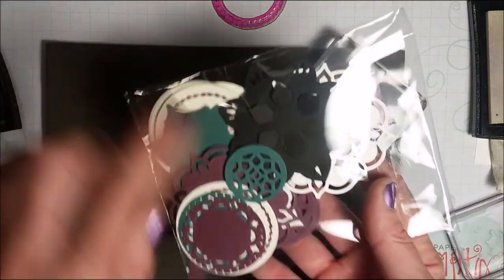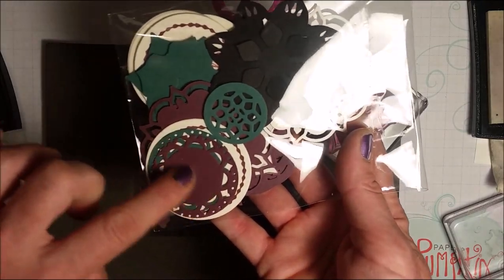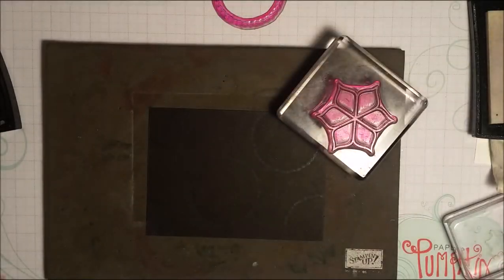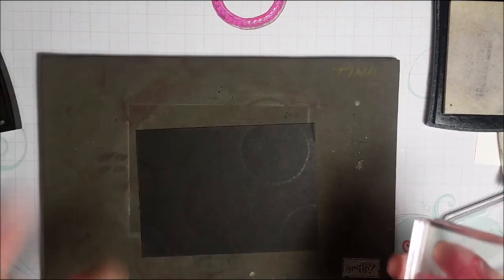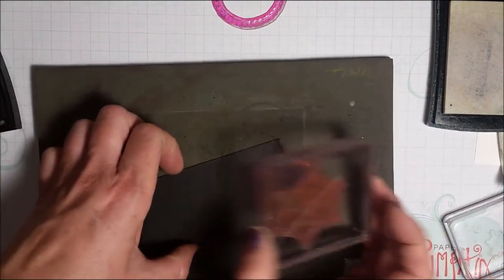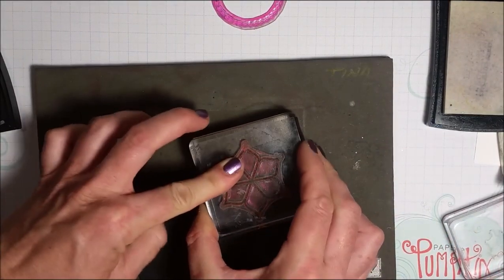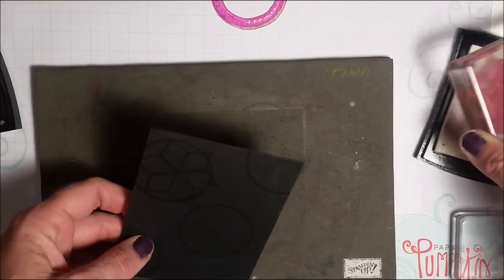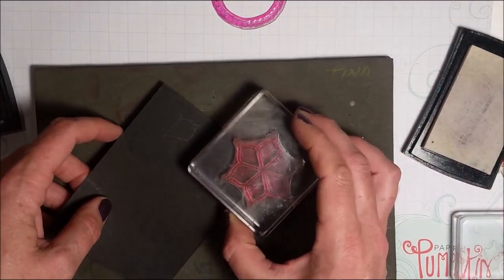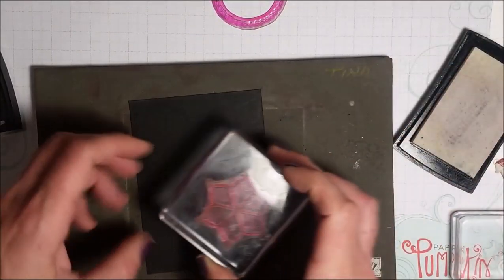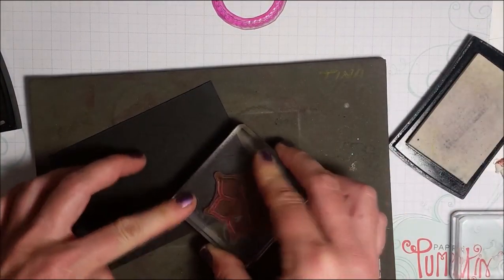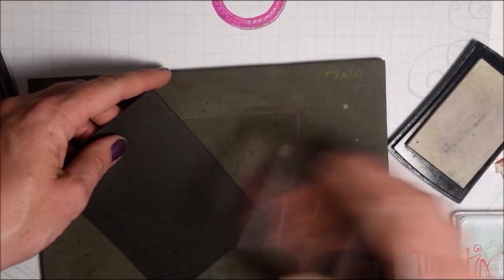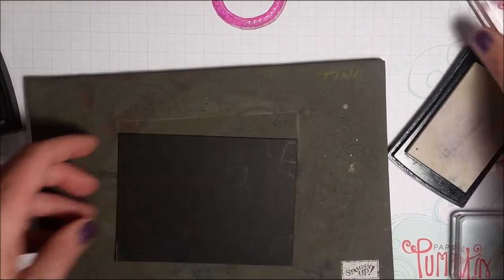So the framelits that coordinate with this stamp set are mind-boggling. Last count is you can create over 80 different varieties of the framelits. I'll just quickly show you because I have a whole bunch that I've tucked into my bag here. Gorgeous, gorgeous. There's just so much you can do with this, it's just mind-boggling.